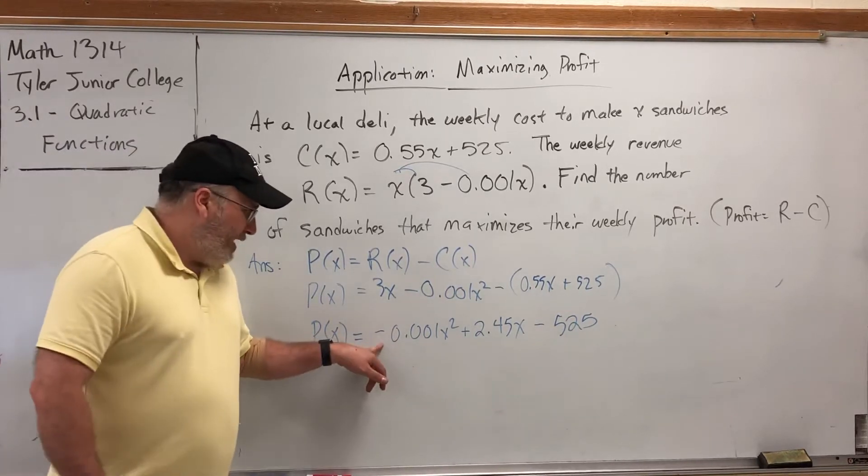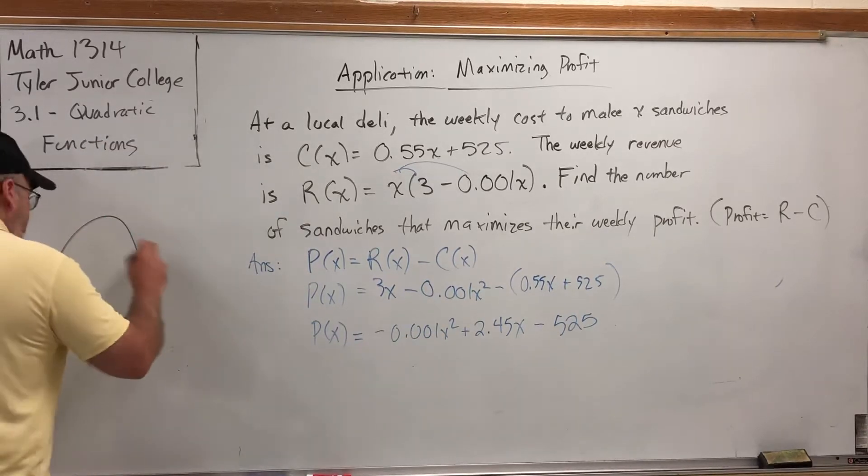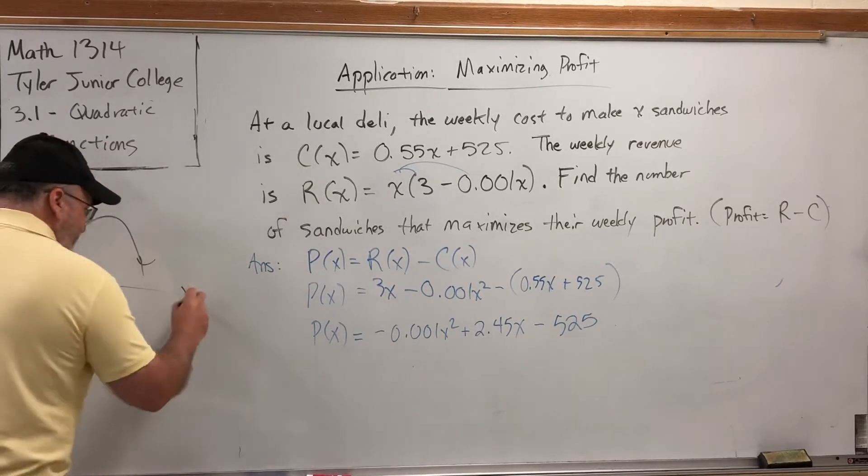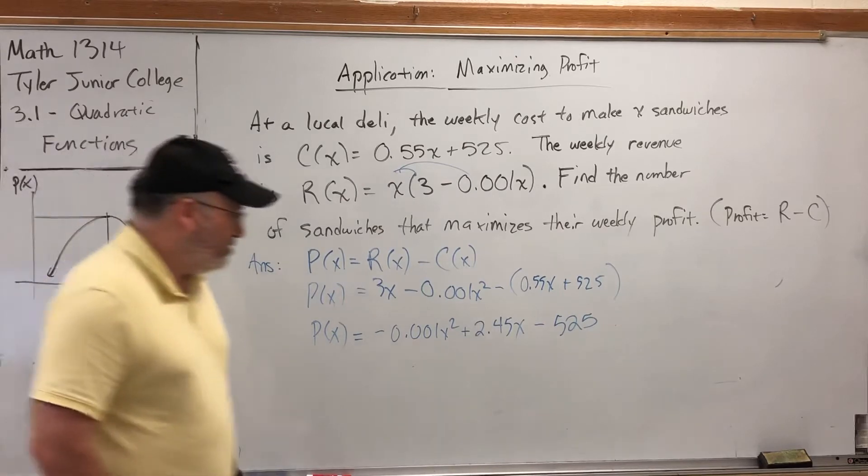Well, this is a parabola that opens downward. So if this were on a graph, then X would be the number of sandwiches and P of X would be the profit. The maximum profit is represented at the vertex. So if we can find the X coordinate of the vertex, we've answered the question. How many sandwiches do they need to make?